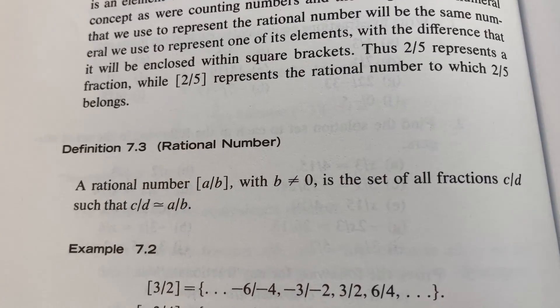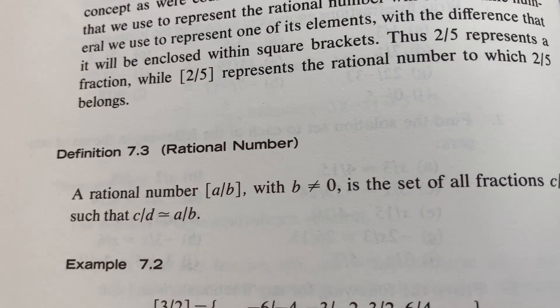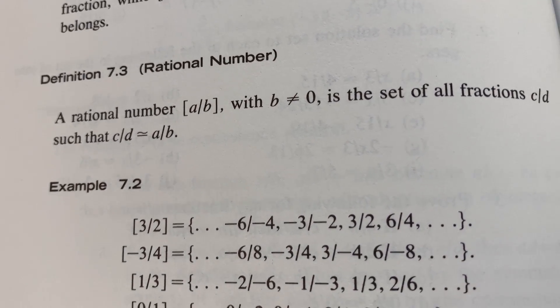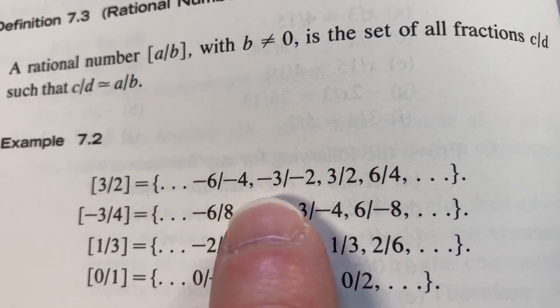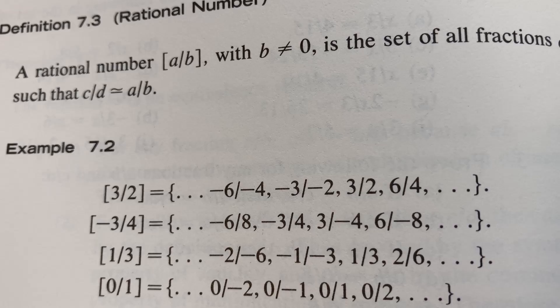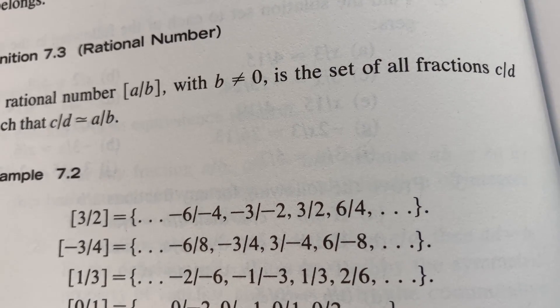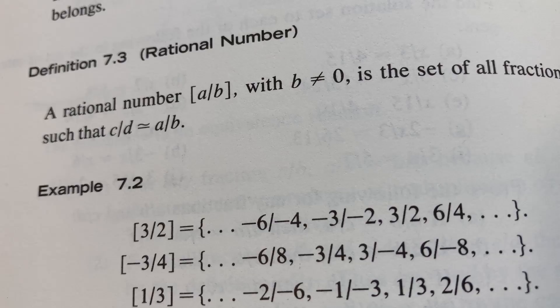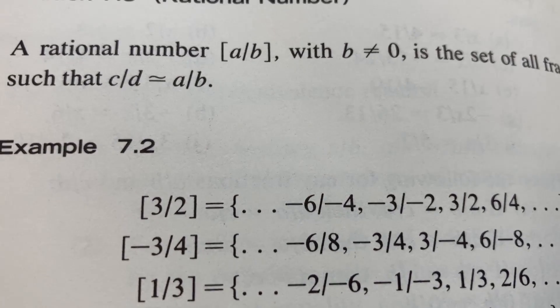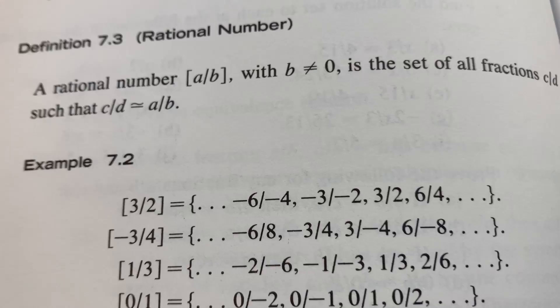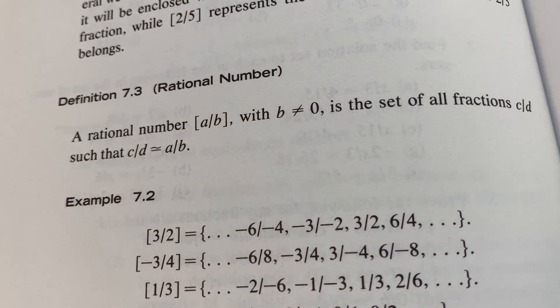Definition 7.3, rational number. A rational number, and he has here the equivalence class of a over b with b not equal to zero, is the set of all fractions c over d such that c over d is equivalent to a over b. And here you have some concrete examples which might help clarify any questions you may be having at this point. So for example, this set here, the equivalence class of 3 over 2, is equal to this set here with all these fractions in it. And notice they're all the same as 3 over 2. So negative 6 over negative 4 is 3 over 2, negative 3 over negative 2 is 3 over 2, 3 over 2 is 3 over 2, 6 over 4 is 3 over 2. So there's infinitely many fractions that are equivalent to 3 over 2. And this set here, which is called the equivalence class of 3 over 2, is the set of all equivalent fractions.